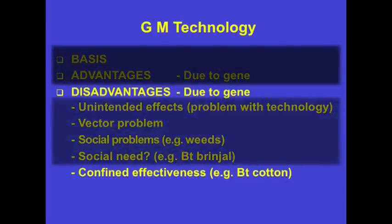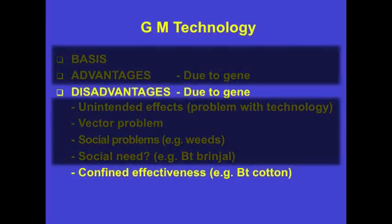So there was really no need for BT Brinjal. Brinjal is the cheapest vegetable in India, available around the year, available everywhere—it's a poor man's vegetable. So there was really no social need. And then there's the question of confined effectiveness. BT cotton, the only genetically modified crop approved in India, it now turns out after 10 years that it has worked in irrigated areas but hasn't worked in rain-fed non-irrigated areas, which represent two-thirds of the area under cotton in the country.